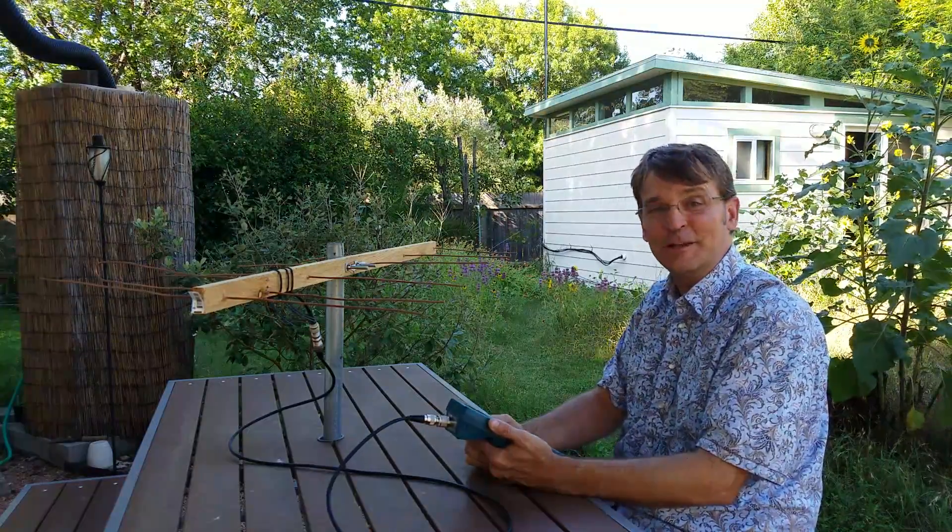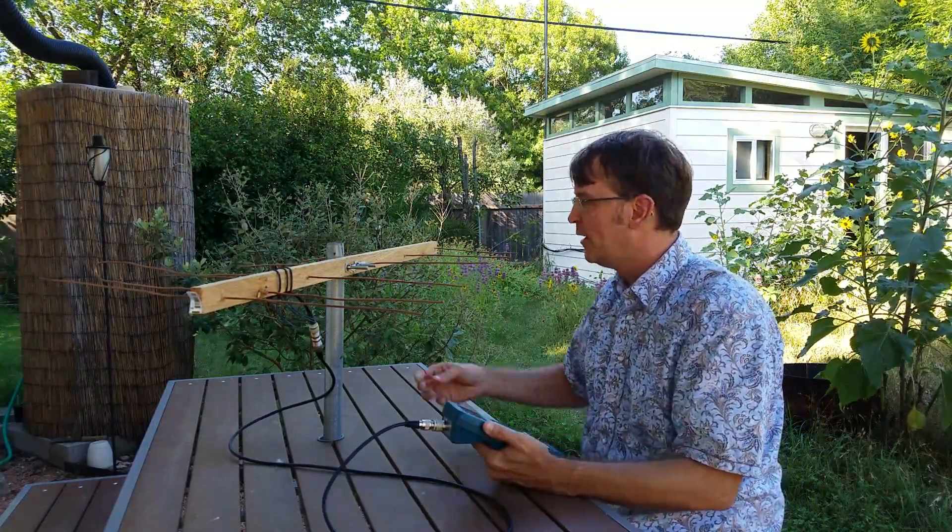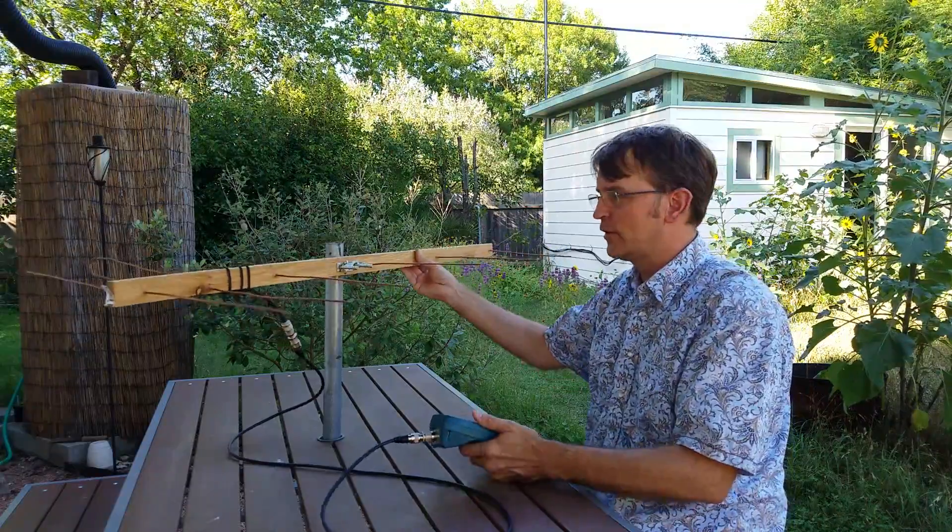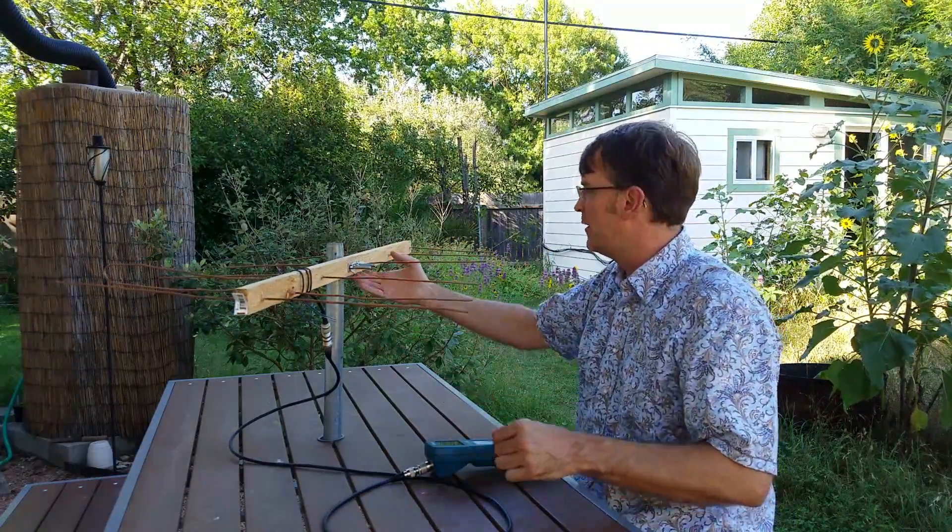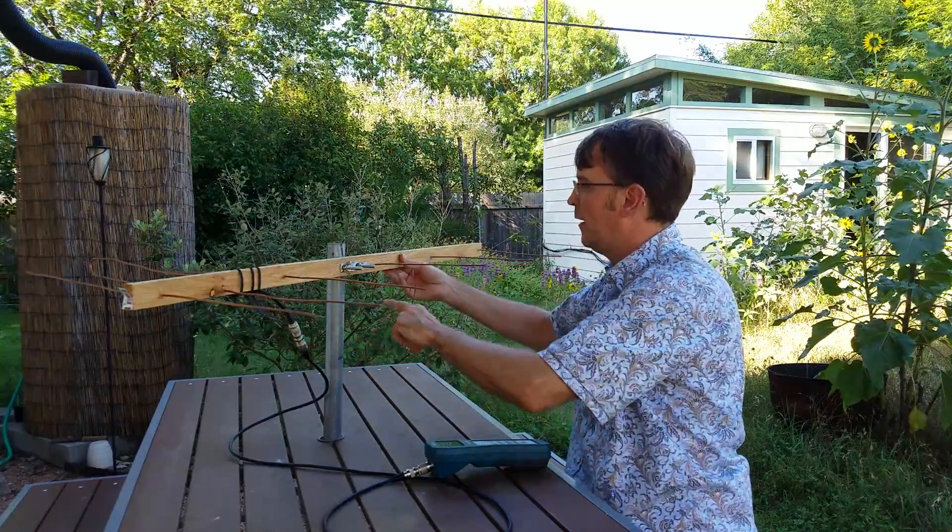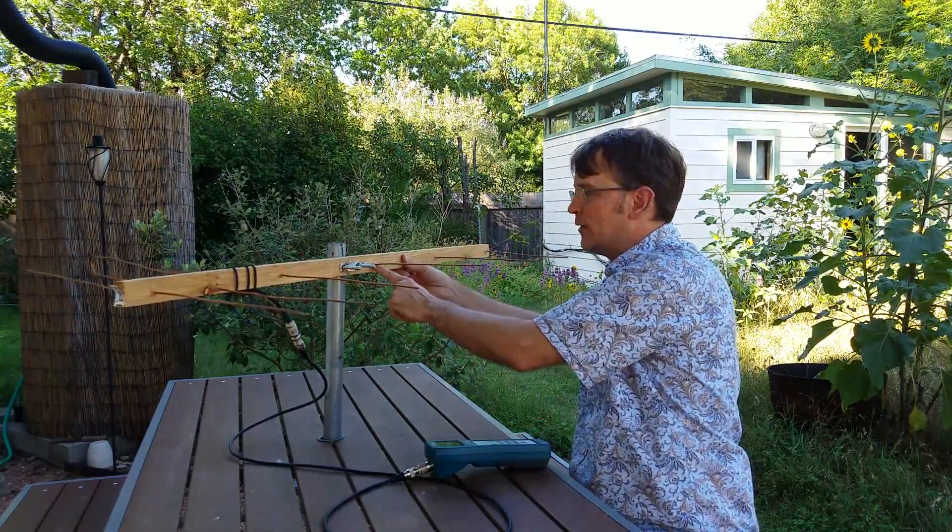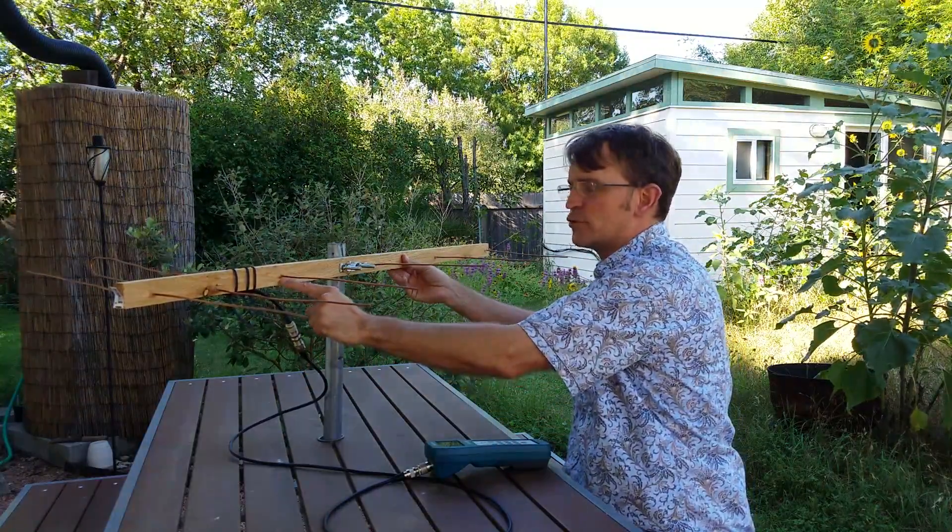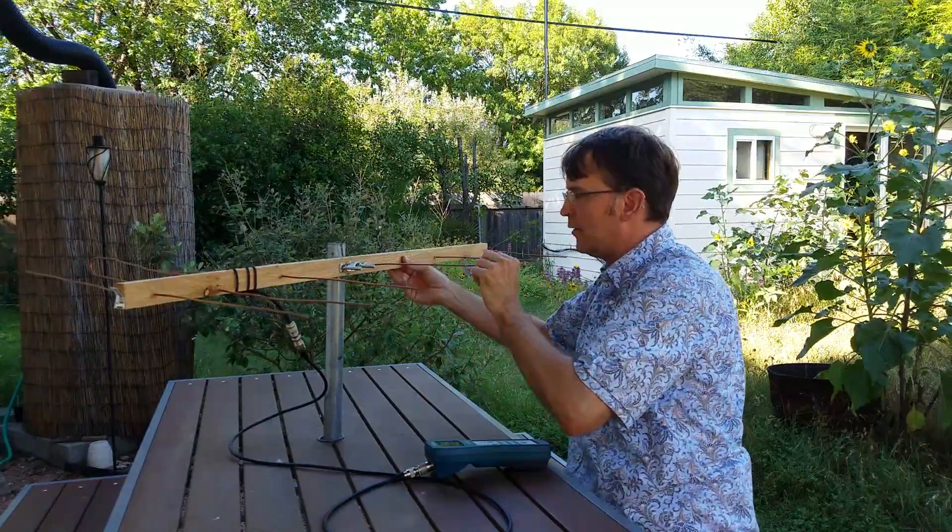The only other thing you would need that I didn't mention is some zip ties to secure the coax. I use some RTV cement. When I'm drilling these holes, I drill them at a diameter that allows the elements to pressure fit in there so they don't wiggle around.